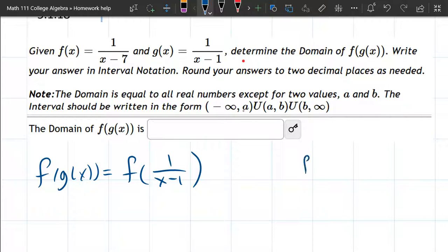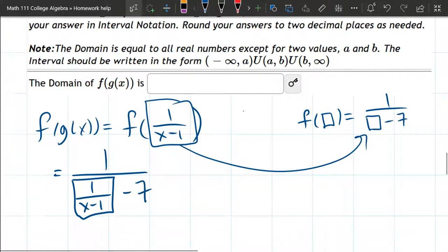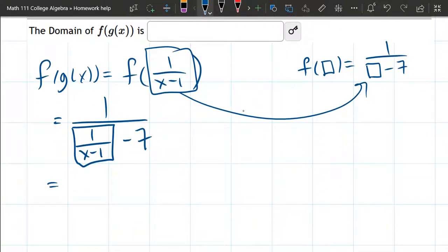Now I'm gonna rewrite f, but instead of feeding it an x, I'm gonna feed it a box here. And that's gonna give us one over the box minus seven. So what's in the box is this right here. So that's gonna be put inside that box right there. So it's one over, one over x minus one minus seven. Of course, we don't write with boxes. We use parentheses.